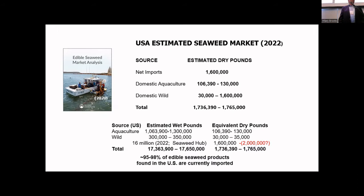The United States has an exclusive economic zone of over 11 million square kilometers — the second largest in the world. Our landmass is only 9 million square kilometers. So we have an opportunity to do cultivation of different types of economically valuable seaweeds in our coastal waters, growing the seaweeds and extracting the nutrients.